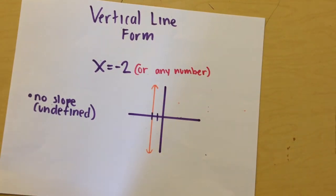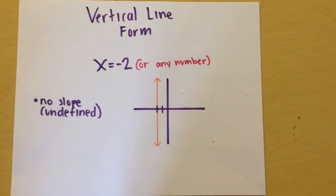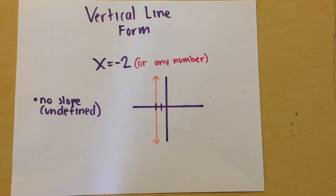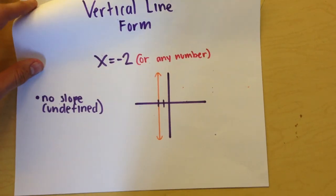Vertical line form is the counterpart to horizontal line form, where you show X is equal to any real number. Vertical lines have no slope, or undefined slope.